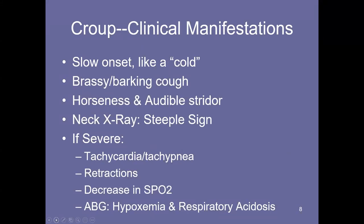Croup has a slower onset and tends to be less severe than epiglottitis — more like a cold. It can result in a brassy or barking cough, hoarseness, and audible stridor. In the next slide, I'll show an example of what you might see on a neck x-ray with a moderate to severe case of croup. In about 70 to 75% of cases, you'll find what's known as the steeple sign.